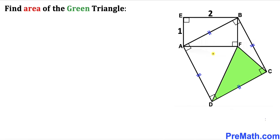Welcome to pre-math. In this video we have got square ABCD along with rectangle AFBE, as you can see in this diagram. The side lengths for rectangle AFBE are one and two units, and now we are going to calculate the area of this green shaded triangle.